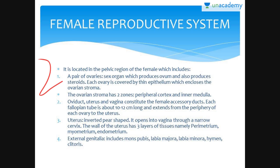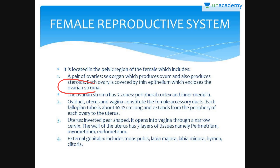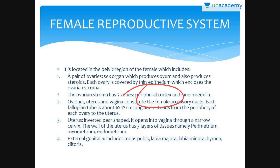Each ovary is about 2 to 4 cm, connected to the pelvic wall and uterus by ligaments. Each ovary is covered with a thin epithelium which encloses the ovarian stroma. The ovarian stroma has two zones: the peripheral cortex and the inner medulla.